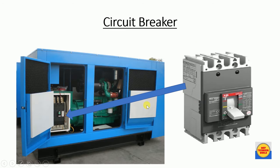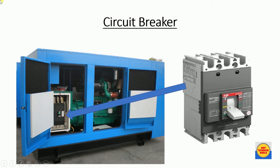Finally, the circuit breaker — specifically an MCCB — is fitted at the output terminal of the DG. The output cable from the MCCB is connected to a synchronization panel or ATS panel and then to the load. This circuit breaker protects the alternator from overload and short circuit conditions. These are all the major parts of a diesel generator.